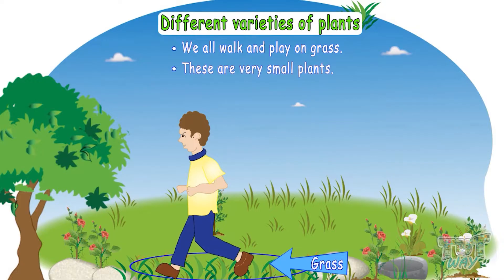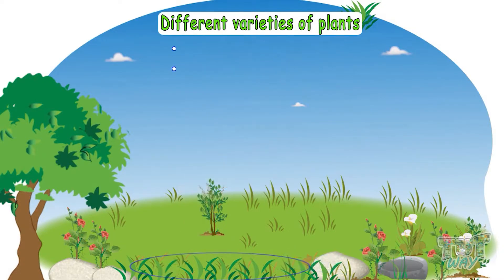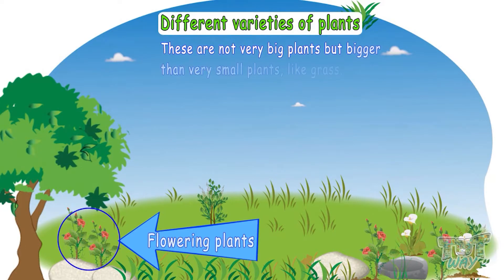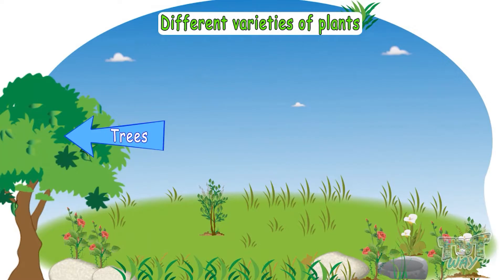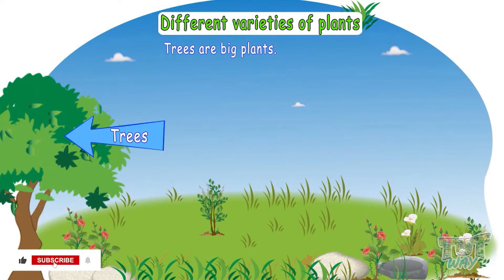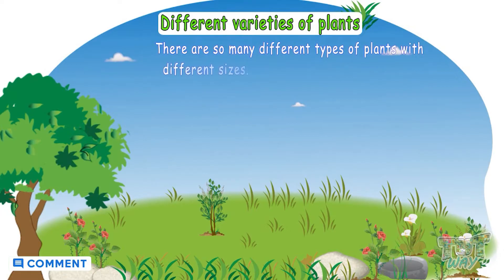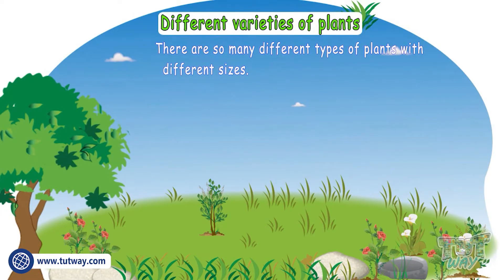These are very small flowering plants — not very big, but bigger than very small plants like grass. These are trees — they are just so big! So kids, there are so many different types of plants with different sizes. Let's study about each type of plant one by one.